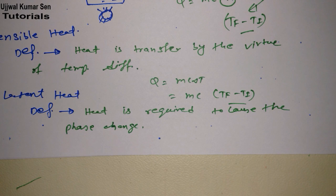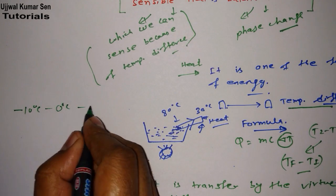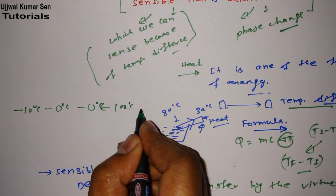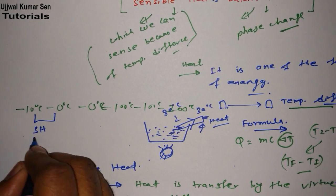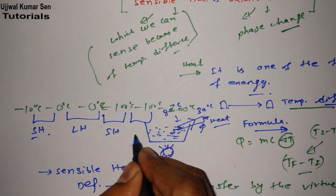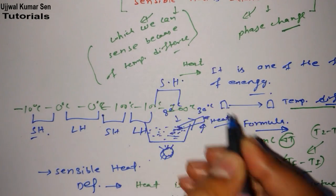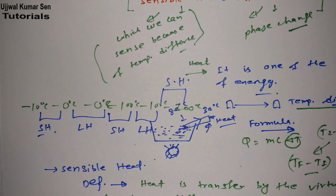Let's understand sensible heat and latent heat in terms of a temperature diagram. Suppose we start at minus 10 degrees centigrade, then reach 0 degrees centigrade — sensible heat is going on here. From 0 to 0 degrees centigrade, latent heat is occurring — phase is changing. From 0 to 100 degrees centigrade, sensible heat. At 100 to 100 degrees centigrade, latent heat again. Then from 100 to 300 degrees centigrade, sensible heat is going on. From this diagram, you can understand: in case of sensible heat, there is a temperature difference; in case of latent heat, only phase change is going on. This is the real difference between sensible heat and latent heat.